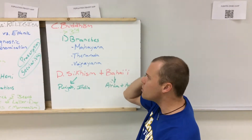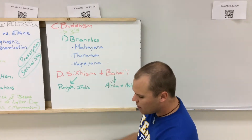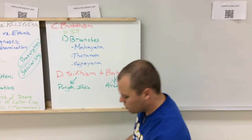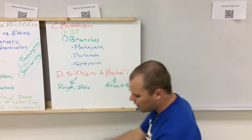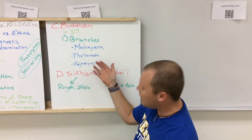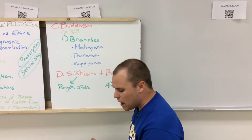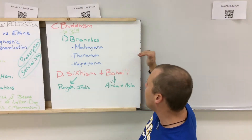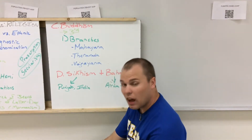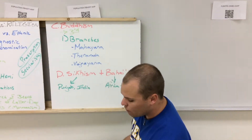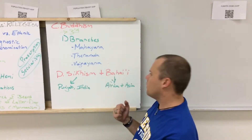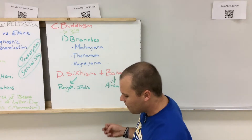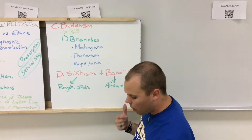There are three different branches of Buddhism. The first is Mahayana, where 56% of Buddhists are located — primarily in China, Japan, and the Koreas. The second is Theravada, with about 38% of Buddhists, located in Cambodia, Laos, Myanmar, Sri Lanka, and Thailand. The third branch represents about 6% of Buddhists and is located in areas like Tibet and Mongolia.